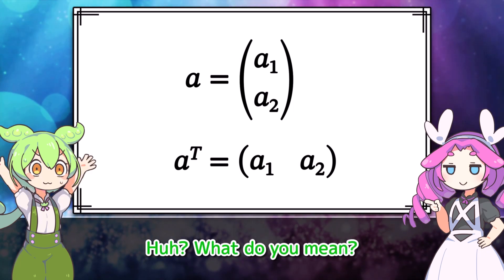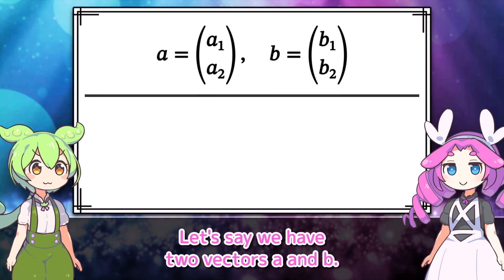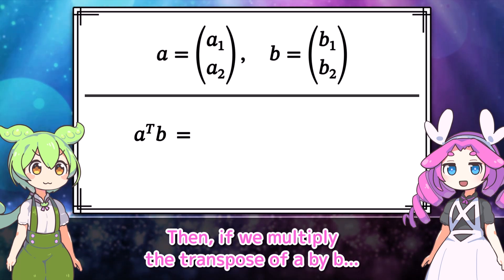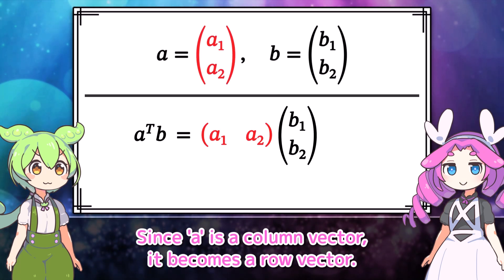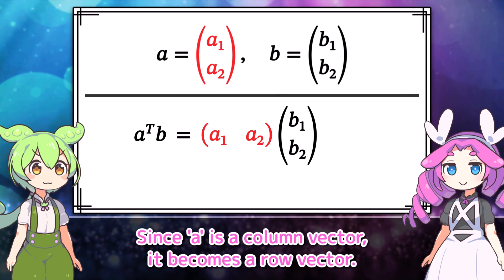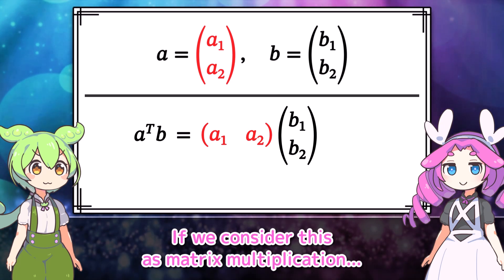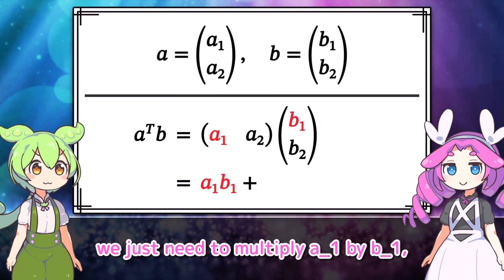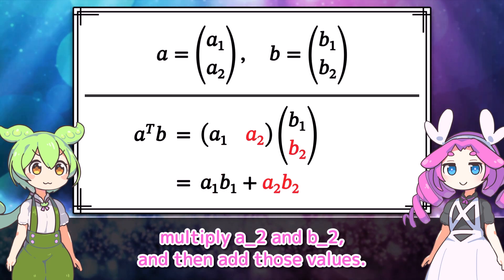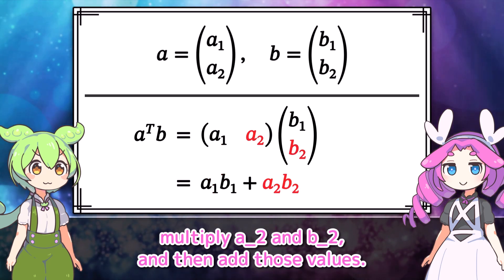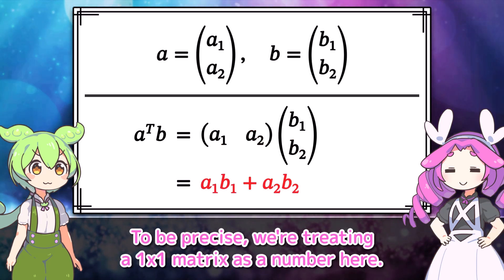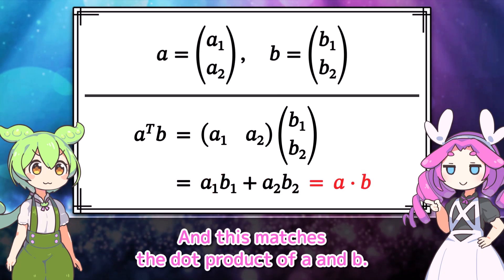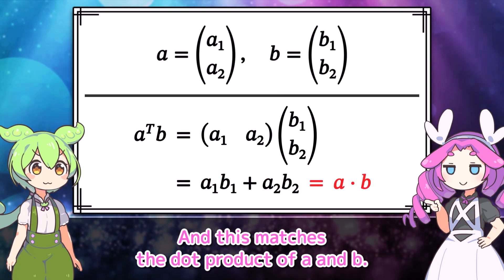What do you mean? Let's say we have two vectors A and B. Then, if we multiply the transpose of A by B — since A is a column vector, it becomes a row vector. If we consider this as matrix multiplication, we just need to multiply A1 by B1, multiply A2 and B2, and then add those values.